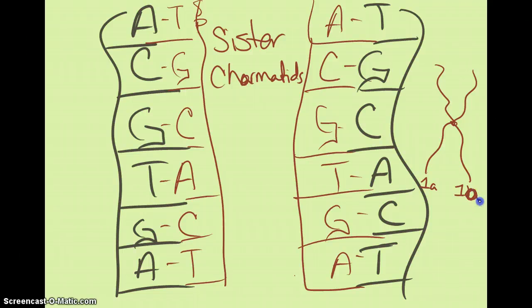I'm sorry, I said that backwards. Each of these would be copies of chromosome 1A. Then our chromosome 1B, our second one, is going to be two copies of 1B.